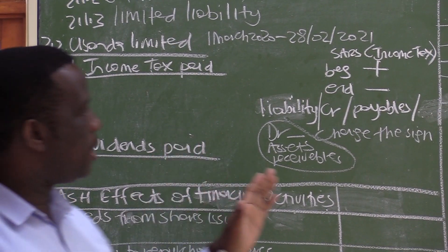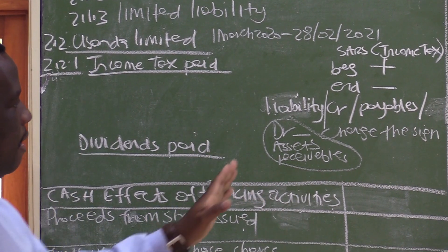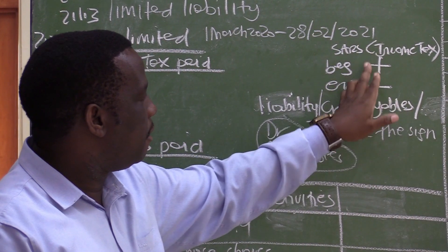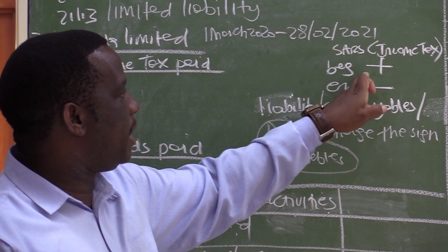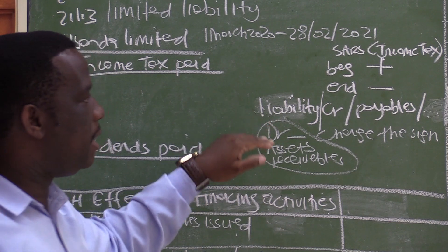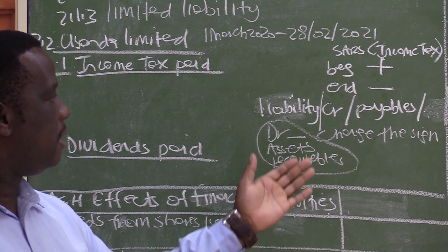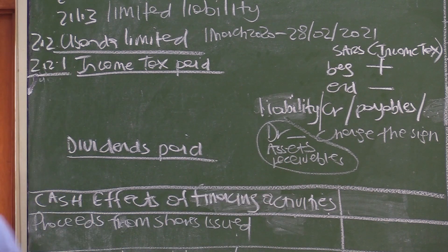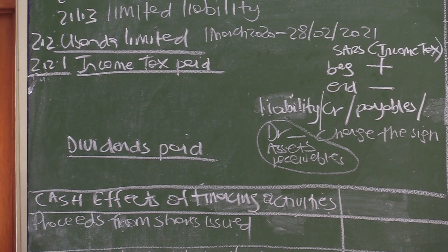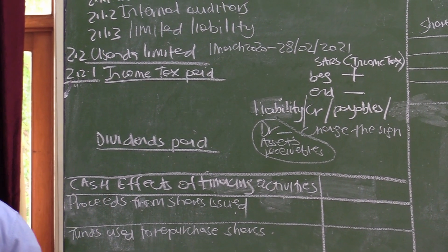Your income tax for the year — plus beginning minus end. If you know this formula, where your SARS beginning is a plus and your SARS end is a minus when everything is under liability, it will be easy. If you see anything different, you simply change the sign. So let us look at the income tax for the year, to calculate the exact amount that was paid to SARS.